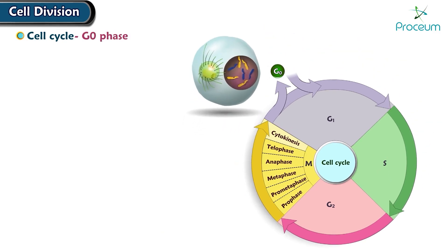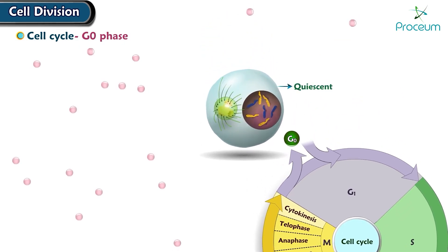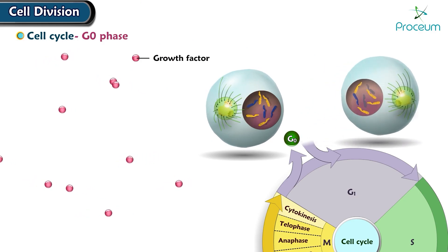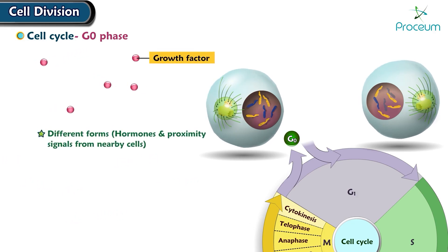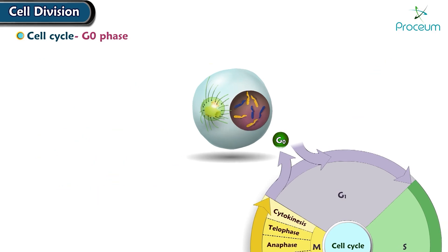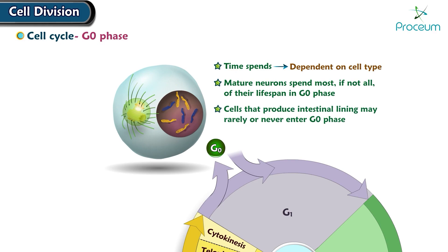G0 phase, also known as the resting phase: During G0, the cell exits the cell cycle and becomes quiescent until it receives external stimuli in the form of growth factors to start replicating again, at which time it re-enters the cell cycle at the G1 stage. Growth factors include hormones and proximity signals from nearby cells, which initiate a signaling cascade that activates proteins necessary for cell division. The amount of time a cell spends in G0 is dependent on cell type — mature neurons spend most or all of their lifespan in G0, while cells producing the intestinal lining may rarely or never enter G0.